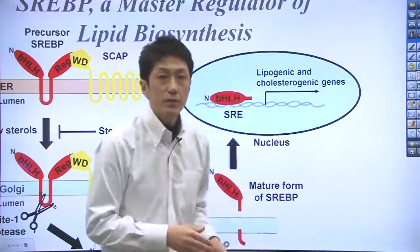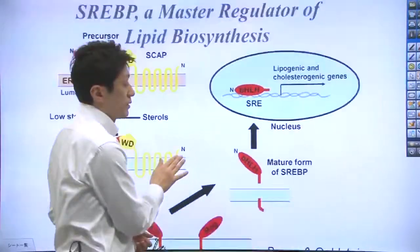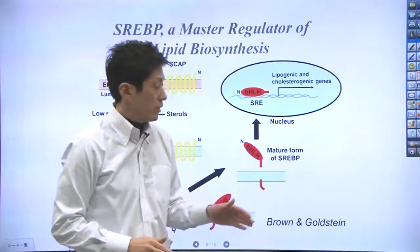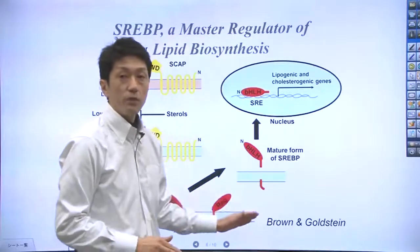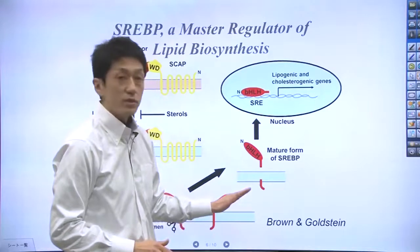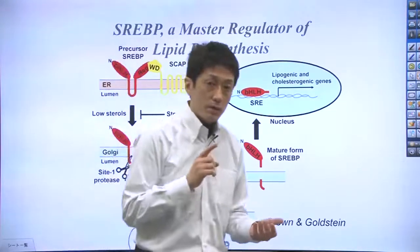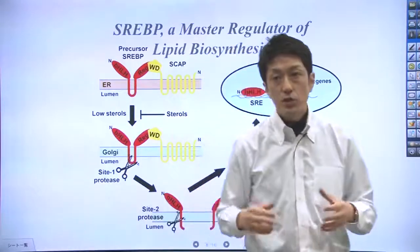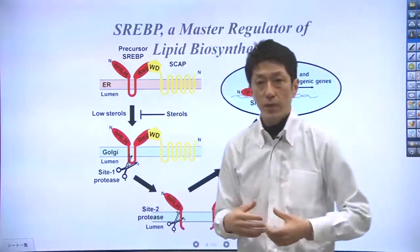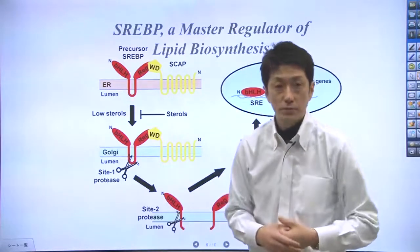This pathway and function of SLBPs were first discovered by Drs. Goldstein and Brown at the University of Texas Southwestern Medical Center in Dallas. In 1985, they shared the Nobel Prize in Physiology or Medicine for their discovery in the field of lipid metabolism.